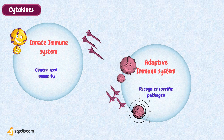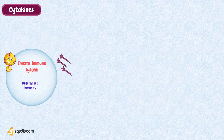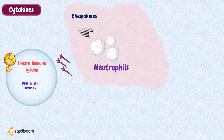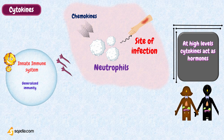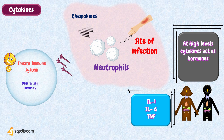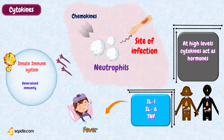Cytokines of the innate immune system are often secreted at low levels over a short range, such as chemokines directed at attracting neutrophils to the site of infection, but they can also be secreted at high enough levels to be measurable in blood samples. When they are secreted at high levels, they act like hormones of the endocrine system. For example, IL-1, IL-6, and TNF secreted during an acute phase response can have distant effects, such as induction of fever.